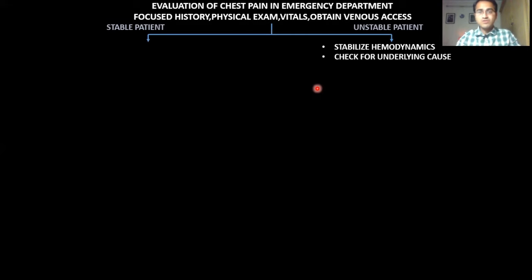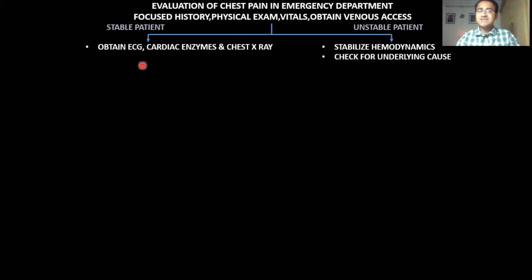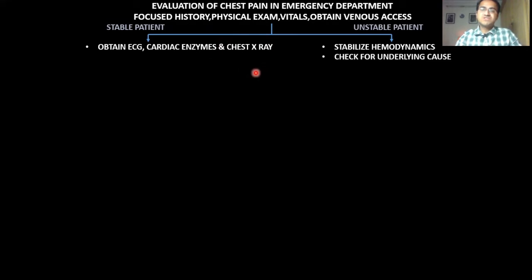If the patient is stable, order a few tests. The first and foremost is ECG, then cardiac enzymes and chest x-ray. ECG and cardiac enzymes tell you about the condition of the heart, and chest x-ray helps rule out other pulmonary causes of chest pain.